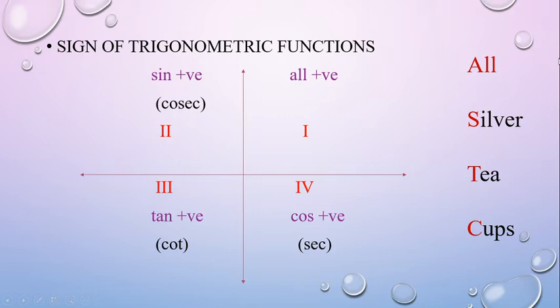All this is the first quadrant — first quadrant is all positive. Second quadrant is sin positive. Third quadrant is tan positive.